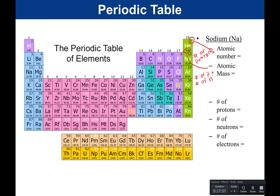Let's look at sodium as an example. For sodium, based on the periodic table, what is the atomic number, the atomic mass, how many protons, how many neutrons, and how many electrons does it have? Pause your video, work this out yourself, and then push play to hear the answers.